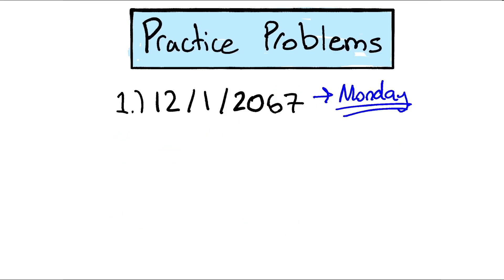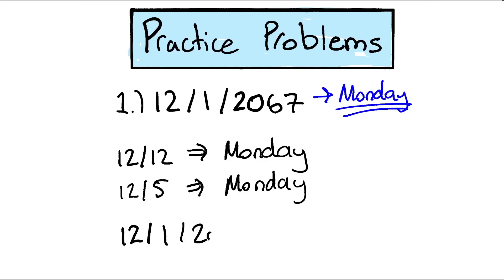Now, from there, utilizing our doomsdays, we know 12/12 is a Monday. So now that's a Monday. And then to backtrack to 12/1, we can do 12/5 is also a Monday. So we know 12/1 is 4 days earlier than a Monday, so we can go back Sunday, Saturday, Friday, and end up on Thursday. So 12/1/2067 equals a Thursday.